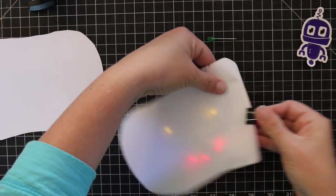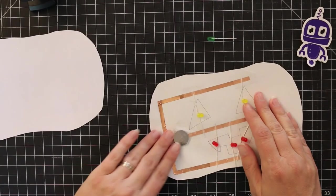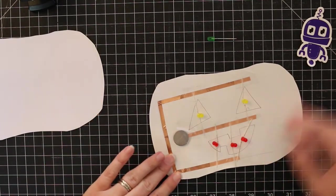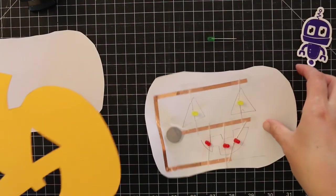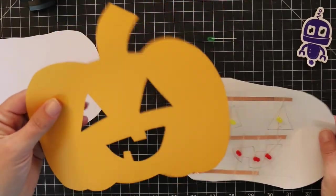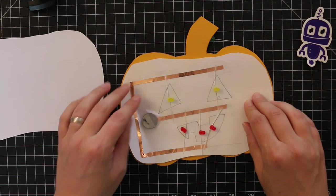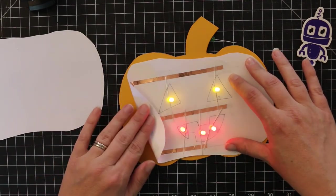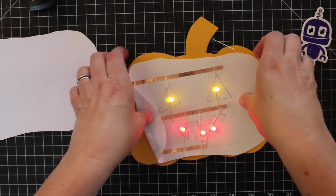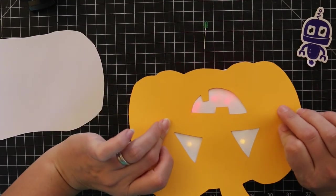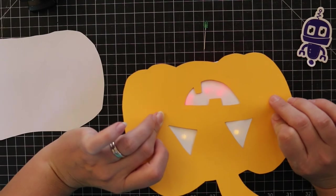So now I'm going to unfold this so it's off. I'm going to grab my pumpkin. I'm going to make sure I have everything lined up correctly. Fold it back over again so I can make sure that it's working for me. It is. All my lights are on and I like kind of where they look.